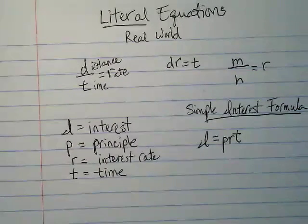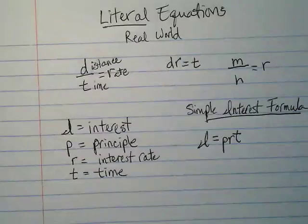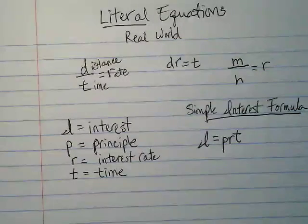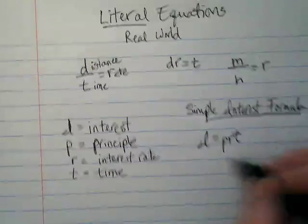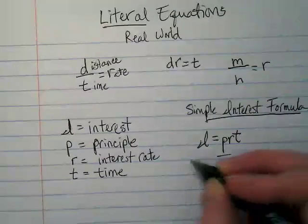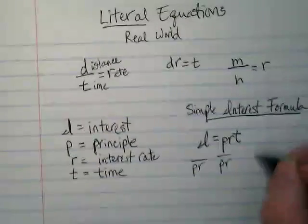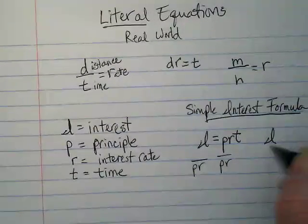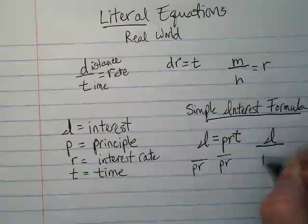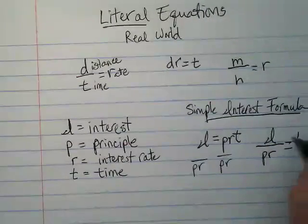The R and the P, and they're being multiplied by it. So to move them away from the T, we would need to divide them. And we would divide them from both sides. And we would rewrite this as the interest capital I over the principal and the rate is equal to the time.